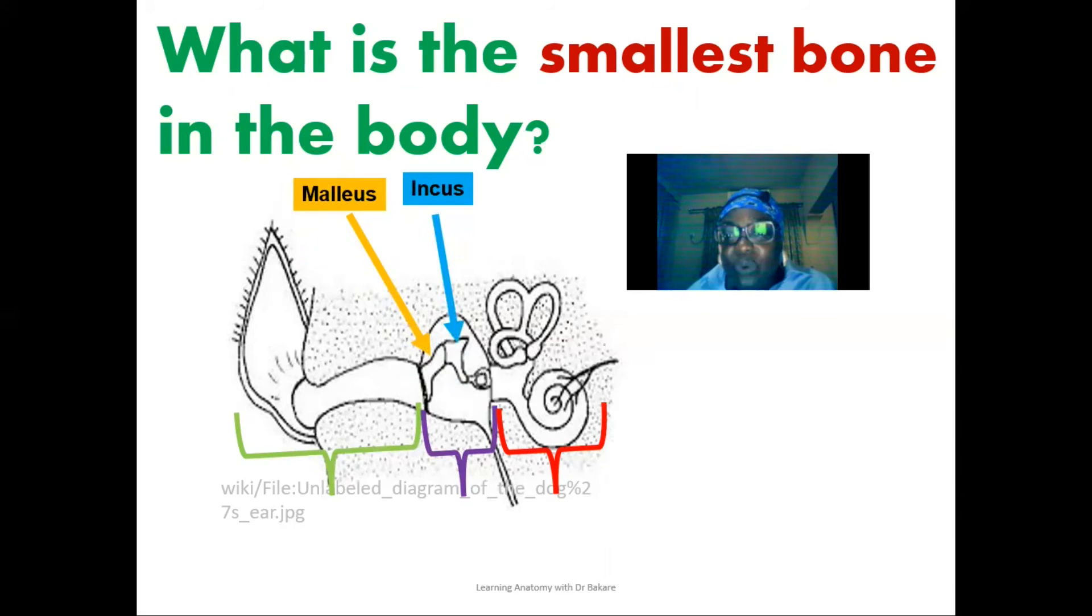Then the most innermost, we have the stapes, and this is the stapes. Out of these three bones, the stapes is the smallest, and this is the smallest bone in the human body.